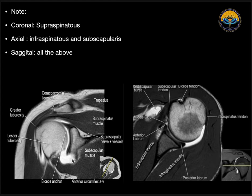So ultimately on coronal sections, we can see supraspinatus and its insertion very beautifully. On axial sections, we can see infraspinatus and subscapularis. On sagittal sections, we can see all of these muscles very beautifully. But the main importance of the sagittal section is to look for muscle bulk and to look for muscle atrophy or fatty infiltration.